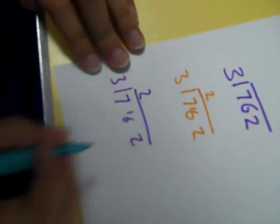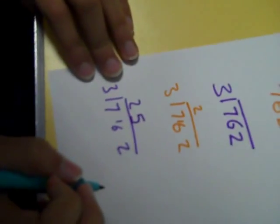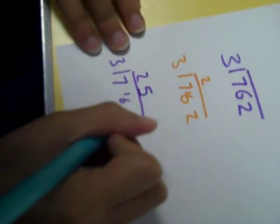You have a remainder of 1, so you make the 2 into the number 12. You see how many times 3 goes into 12. It goes into 12 four times.